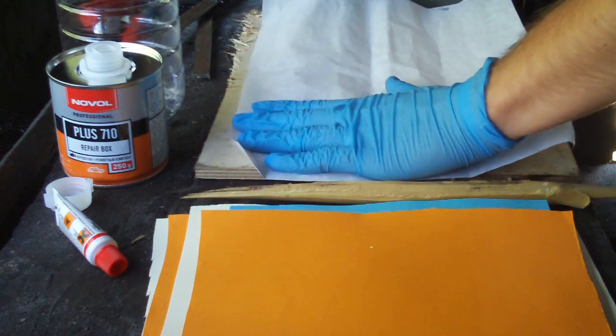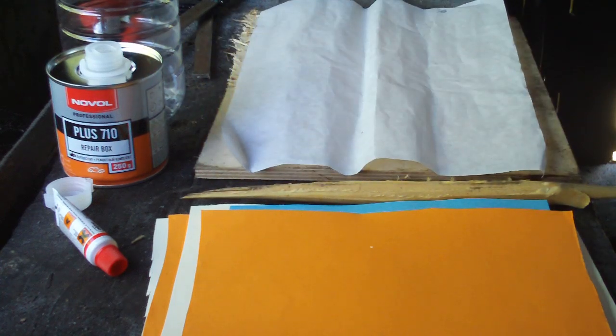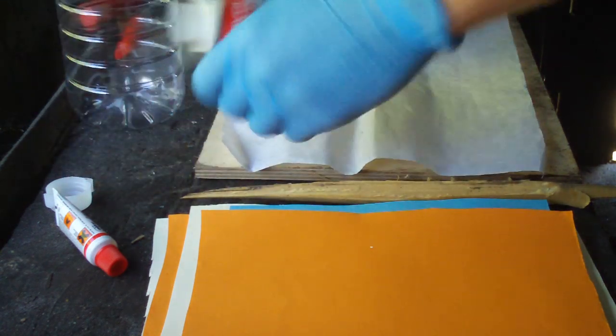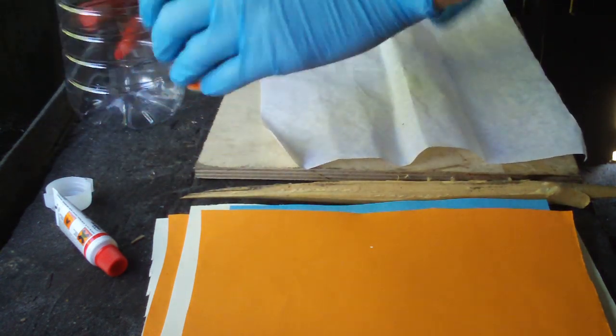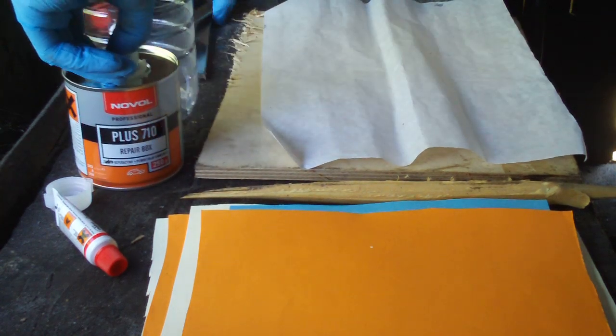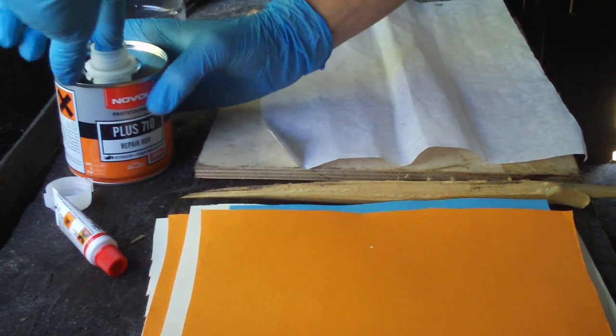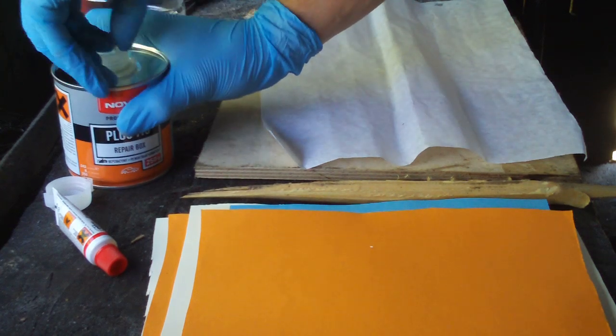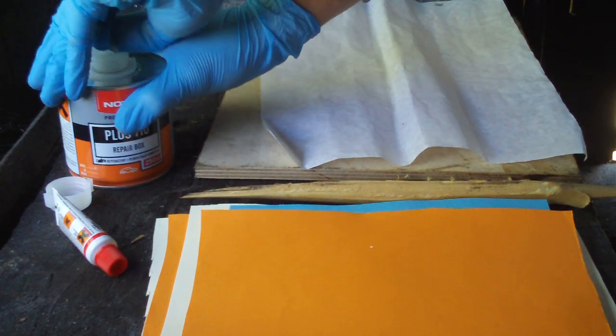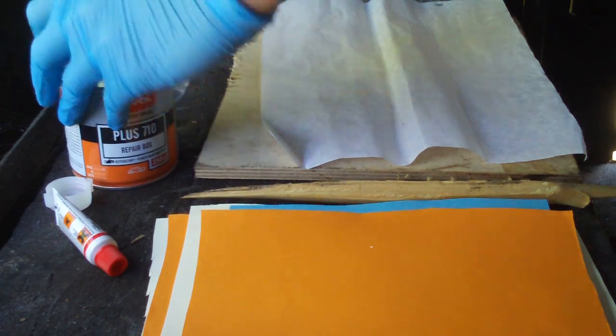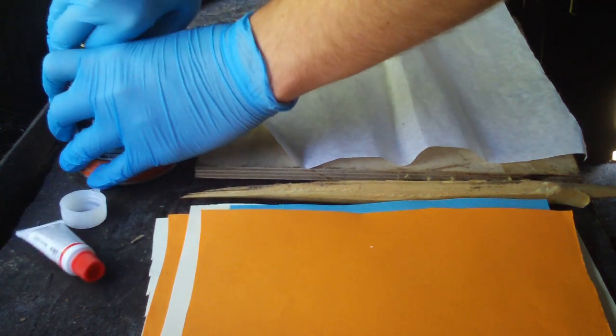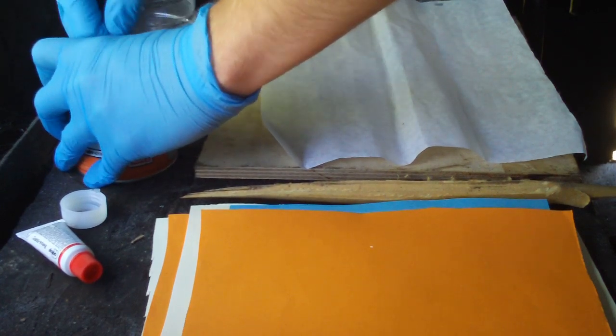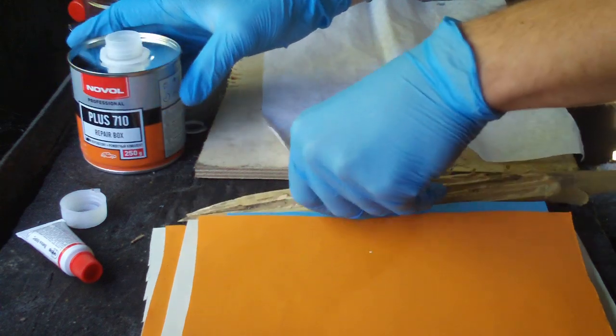What you're going to start by doing is taking the resin, shaking it up a little in the can, and opening it up. Also wear gloves because this is dirty work. You're going to get your hands dirty and this stuff is not easy to get off your hands.